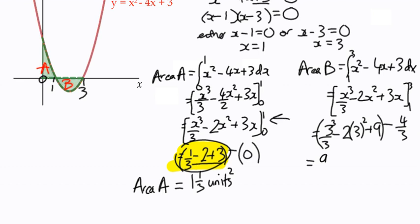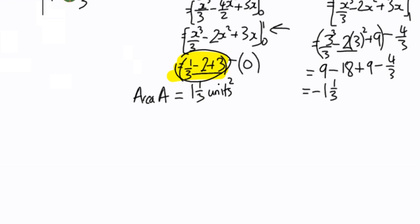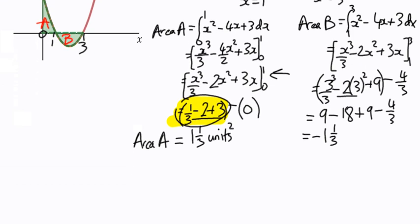The values here: 3 cubed is 27 divided by 3 is 9. Second one, 3 squared is 9 times 2 is 18, so minus 18 plus 9 minus 4 thirds is actually negative 4 thirds or negative 1 and 1 third. Well, it's not area because that's not positive, so the value is negative 1 and 1 third.